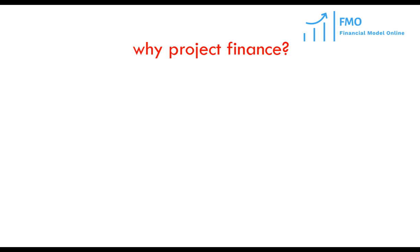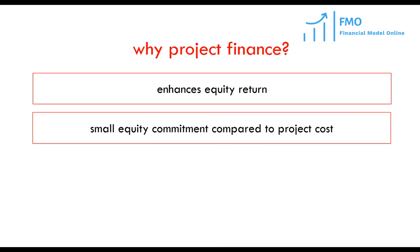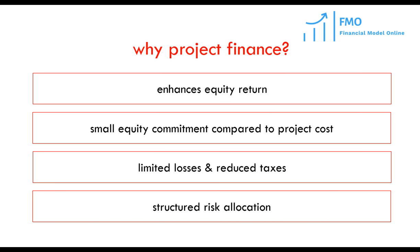So, why does project finance make sense for an investor? First, project finance enhances investors' equity return because of the high leverage. Infrastructure industry is typically a regulated industry, and project returns are usually low and are not sufficient to attract equity financing. So, high leverage is necessary to enhance equity investment returns. Second, due to the high leverage, the required equity commitment is significantly lower than the project's cost, which reduces the risk for the investor. Third, because the project is carried out by the special-purpose vehicle, the investor only risks losing the equity investment made into that special-purpose vehicle. High leverage also generates significant tax savings, as interest expense is a tax-deductible item. Finally, the risk allocation in project finance is highly structured, meaning that risk is allocated to the party which is most capable of managing it. Thus, the overall risk of the project decreases, which we shall see in future lessons.